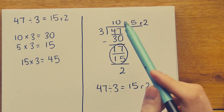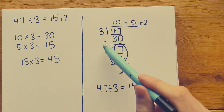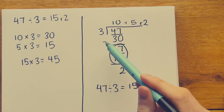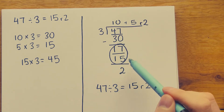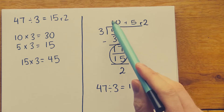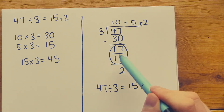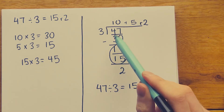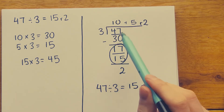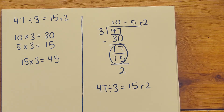Don't worry if all these numbers are getting a bit confusing. The main thing to take away is that the numbers along the top show how many fit in, and the reason we use a vertical layout is so we can do subtractions to find the difference between numbers. Let's do another example to see if that helps.